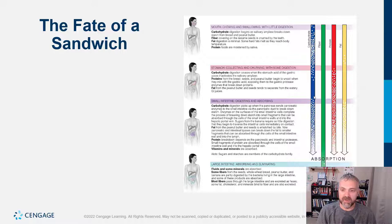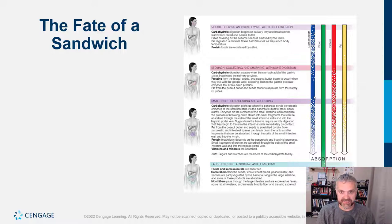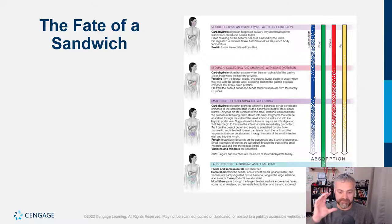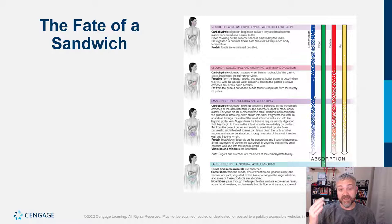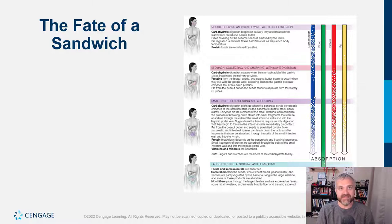Fat absorption is a lot different — the fat is going to be absorbed into the lymphatic system instead of into your circulatory system, so into lymph fluid instead of blood. Fiber is not going to be digested; when you get to the large intestine, some fibers will be fermented by gut bacteria and the rest will pass through you. Maybe seventy percent of the dry weight of your fecal material is dead bacteria, fiber, and similar materials.